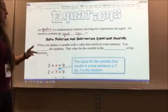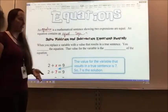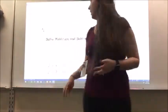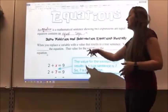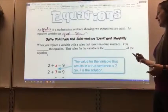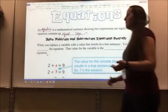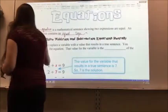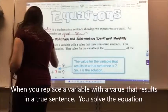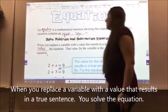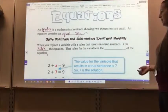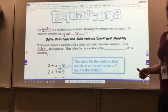So if I'm solving addition and subtraction equations mentally, which means I'm doing them in my brain, I'm not writing anything down. When you replace a variable with a value that results in a true sentence, you blank the equation. In that blank, you're going to write solve. That value for the variable is the blank of the equation. In that blank, you're going to write solution.